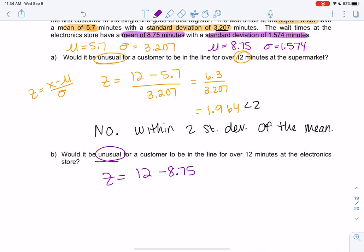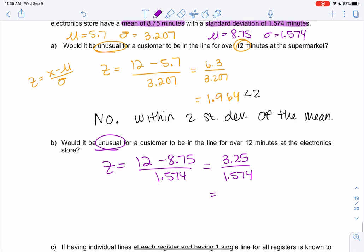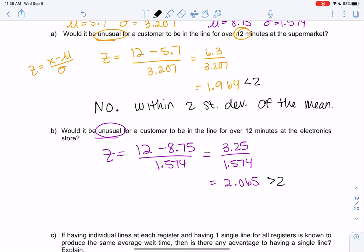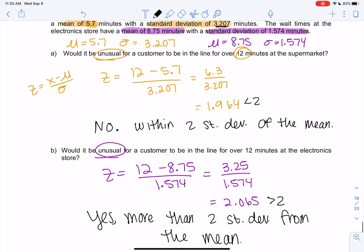What about at the electronics store, 12 minutes—would it be unusual? We'll do 12 minus 8.75. The mean is much larger here, but the standard deviation is smaller. We're going to do 12 minus 8.75—I get 3.25—and divide by 1.574. I got 2.065, so yeah, it actually would be unusual here because it's more than 2, more than two standard deviations from the mean. The mean represents a z-score of zero.